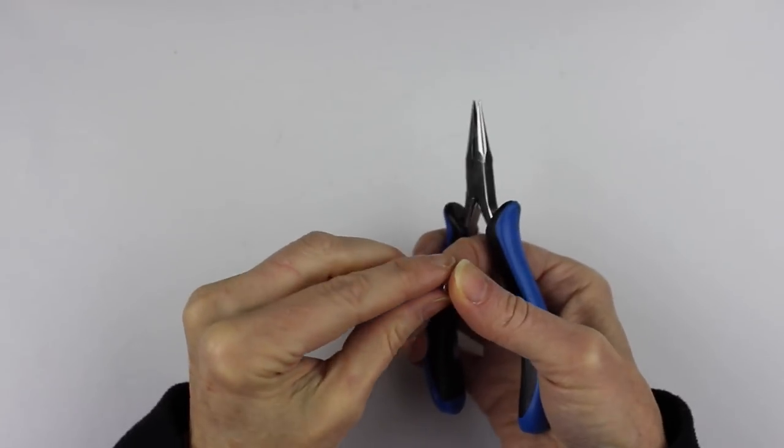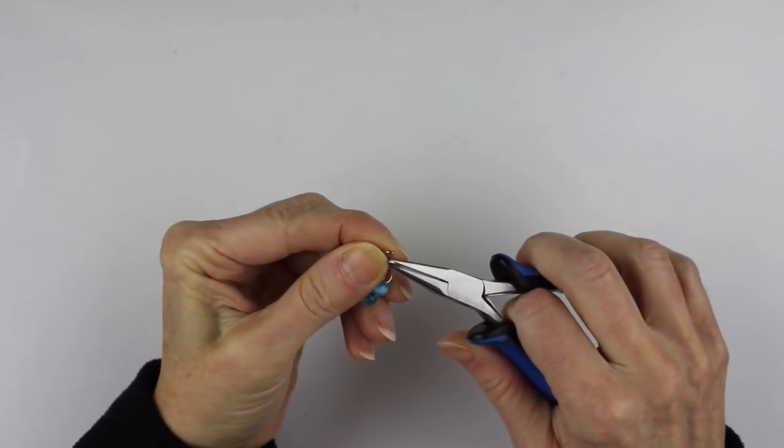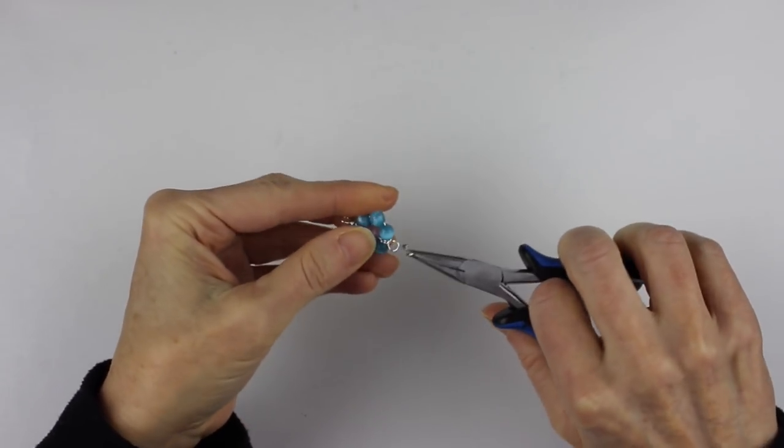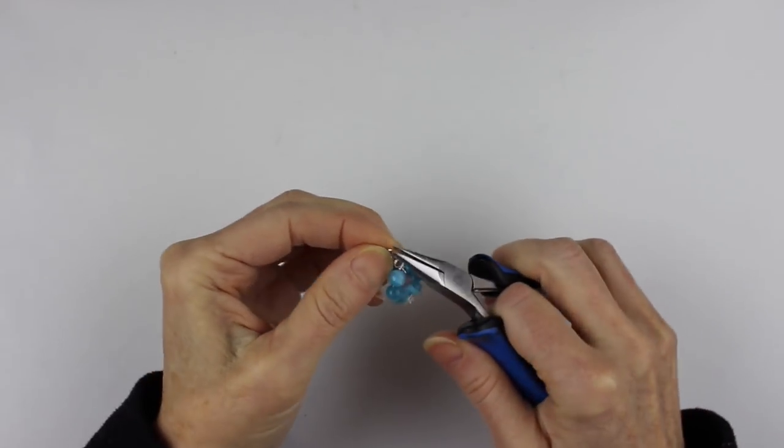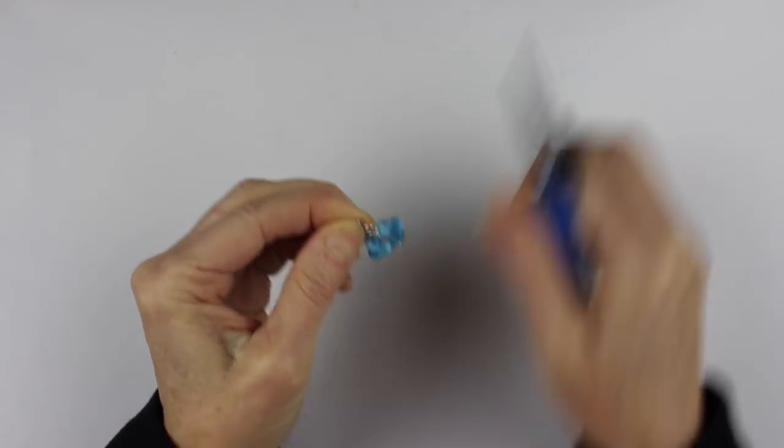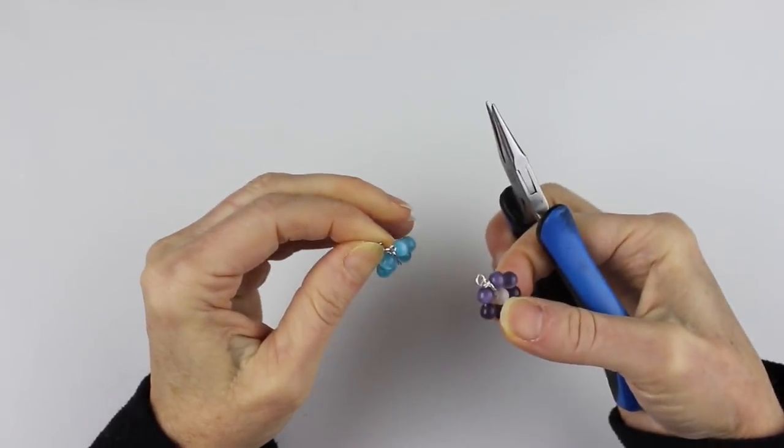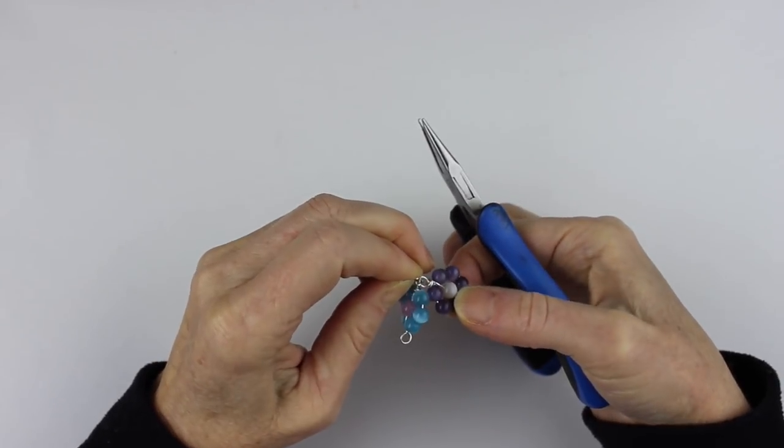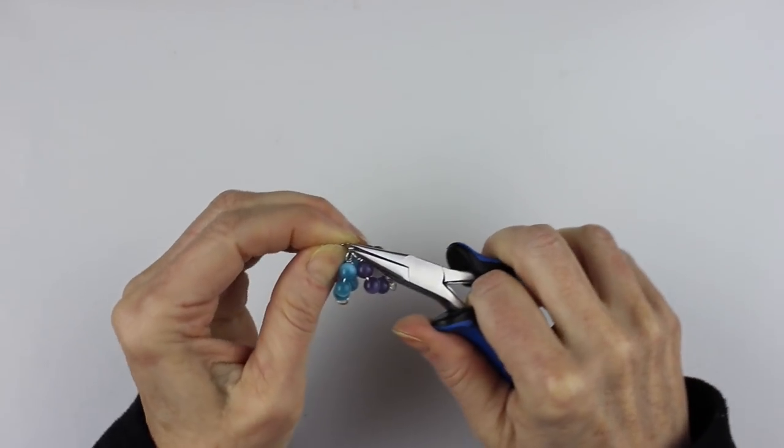So what you're going to do now is add your jump rings. So you're going to take your jump ring and just put it in one side like that and then get your other daisy and attach it. So make sure the top parts are lined up.